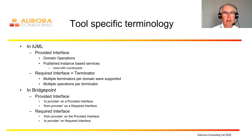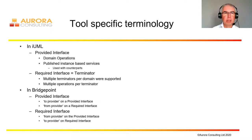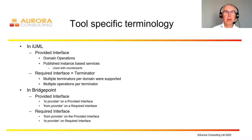Just to reflect briefly on tool-specific terminology: in IUML, the provided interface was primarily domain operations, but there was also the idea in the OA-97 paper that you could invoke services on published instance services using counterparts. The required interface in IUML was called the terminator, and you could have multiple terminators per domain and multiple operations within the terminator. In Bridgepoint, the idea of provided interface and required interface is supported but slightly different to the way I've used them here — a provided interface could be either the 'to provider' on a provided interface or the 'from provider' on a required interface, and I'm sure somebody will correct me on that in the Q&A if I've got it wrong.